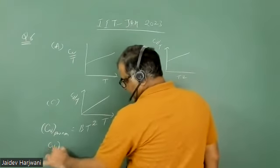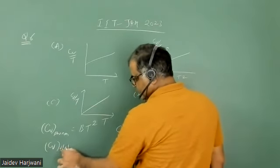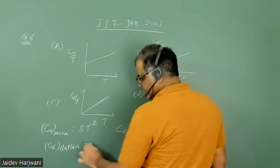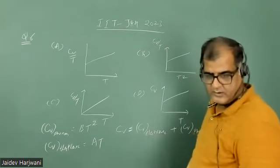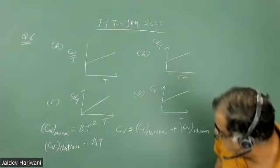The electronic contribution to specific heat is proportional to temperature, which can be written as AT.